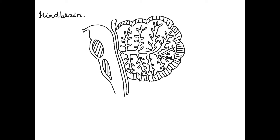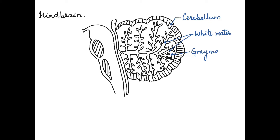Now let's label the parts. This is the cerebellum, and inside we can see the grey matter and the white matter. The white matter appears like a tree-like structure present inside the grey matter. The grey matter consists of the cytons and unmyelinated axons, whereas the white matter consists of myelinated axons. Since the white matter looks like a tree structure, it is called arbor vitae, or the tree of life.